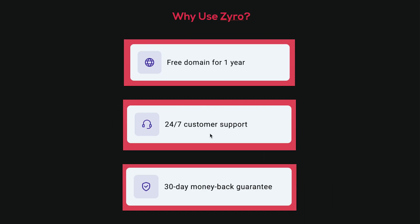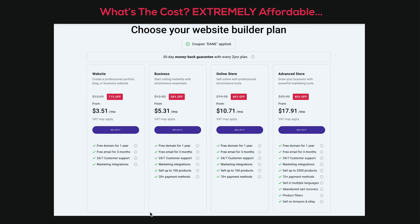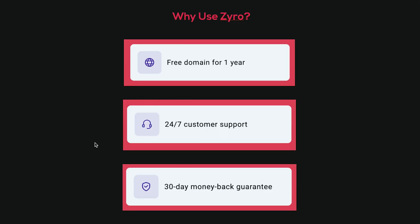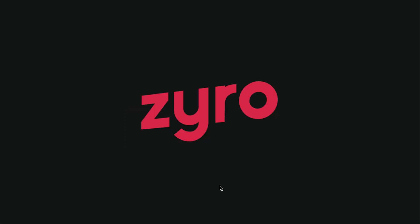One last reminder: Zyro is running an exclusive deal right now. Use code 'Dane' to get an exclusive discount, three extra months, and a complimentary domain with annual plans. You get a free domain, 24/7 customer support — extremely helpful if you're new to this — and a 30-day money-back guarantee. Starting at only $3.51 per month, it's amazing value. Click the first link in the description to automatically apply coupon code 'Dane' and take advantage while it lasts.